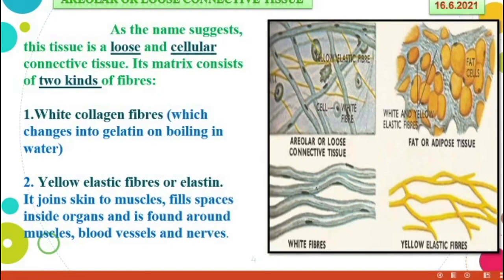The first one: areolar or loose connective tissue. As the name suggests, this tissue is a loose and cellular connective tissue. Its matrix consists of two kinds of fibers. This tissue contains a matrix or substance, with two types of fibers present: the first one, white collagen fibers; the second one, yellow elastic fibers or elastin.